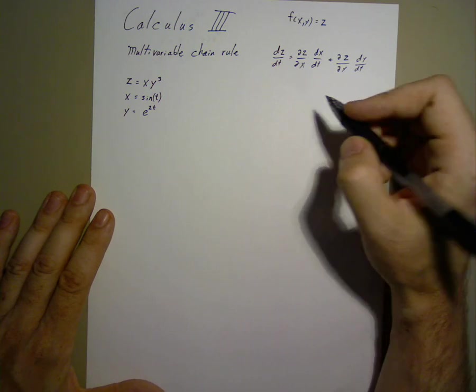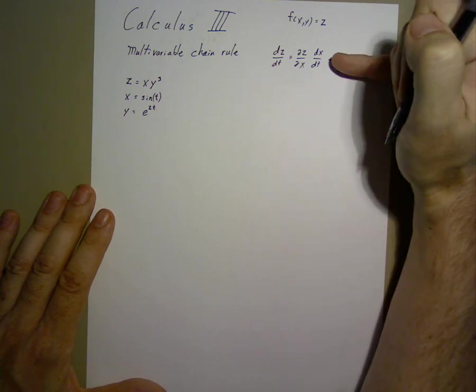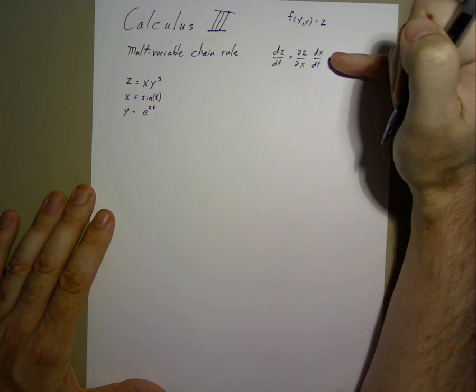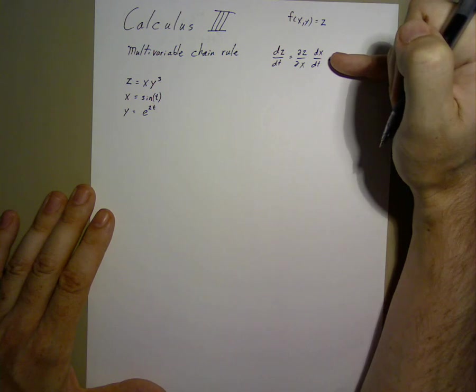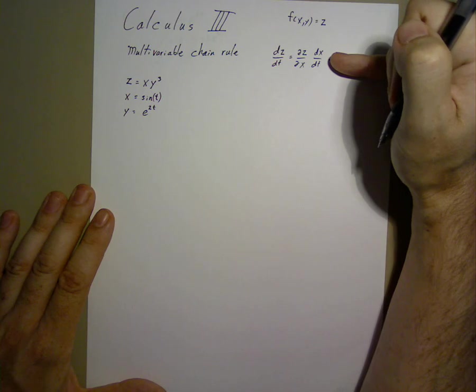When we're doing it with a single variable, the partial derivative acts mostly like the ordinary derivative because there's only one variable to hold steady. There's no variables to hold steady. There's only one variable to take a derivative of.